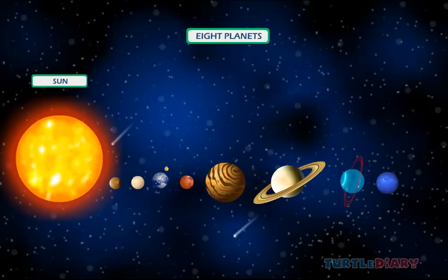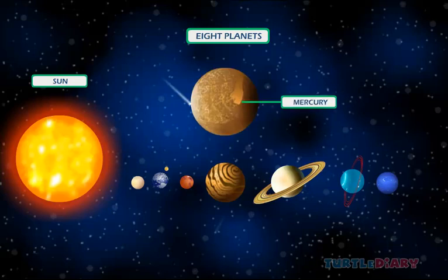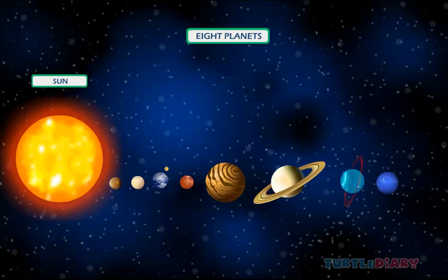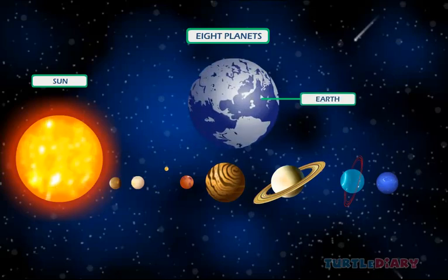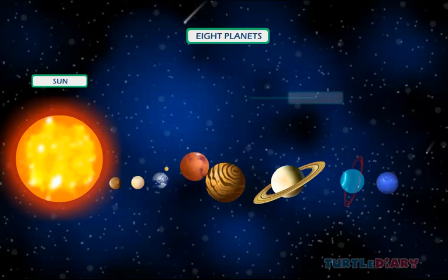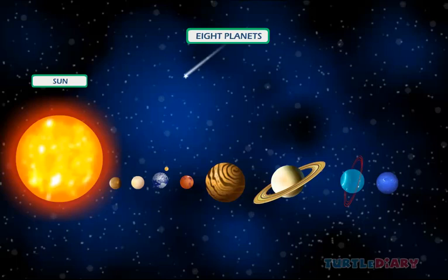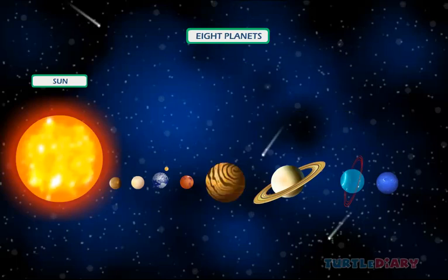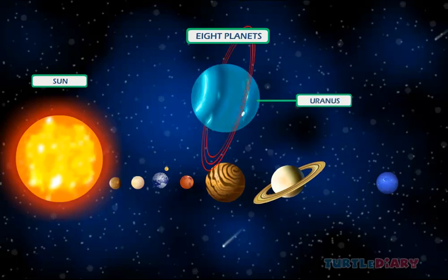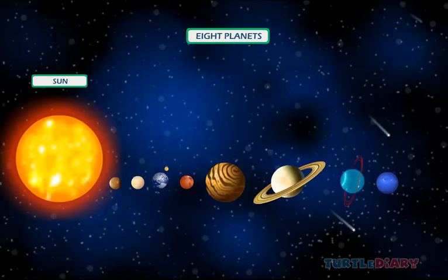There are eight planets in our solar system. They are Mercury, Venus, Earth, Mars, Jupiter, Saturn, Uranus, and Neptune.